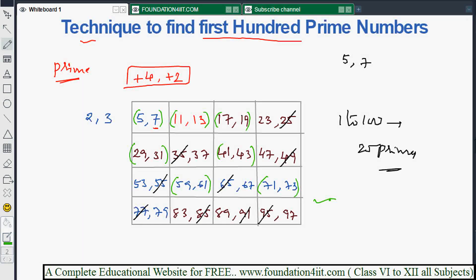This procedure can be extended to find prime numbers between 101 to 200 also. After doing the same plus 4, plus 2 procedure, you have to strike out multiples of 5, 7, and also 11. This is how we can find prime numbers from any set easily.